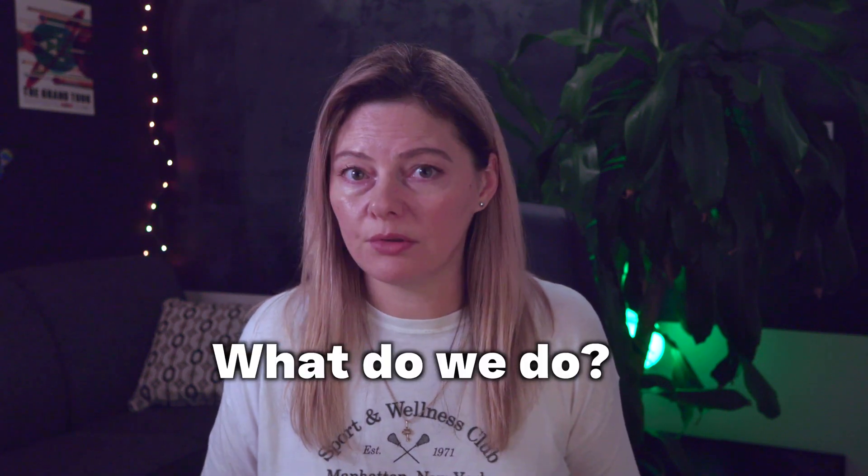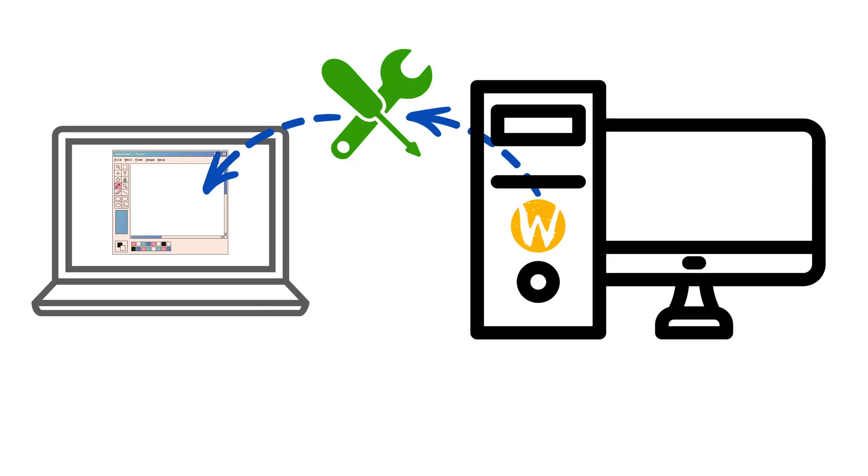So the obvious question is: if Wayland doesn't support network transparency, what do we do? How do we get around this? The solution isn't as seamless as X11, but it can be done. We can build the bridge that is missing in the Wayland protocol. There are a few third-party tools that allow you to set up remote desktops or access graphical applications over a network on a remote machine, even if you're using Wayland. In the next video, we'll dive into those solutions — I've tried my best to categorize them and give you a clear decision tree to help you choose the best solution for your particular setup.